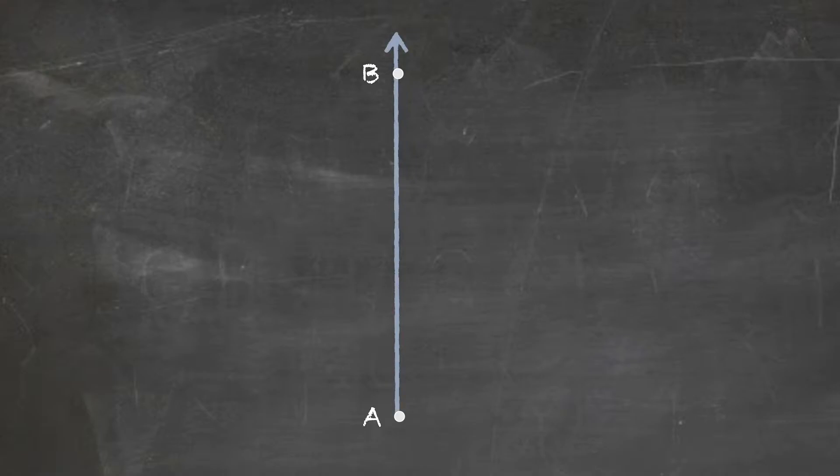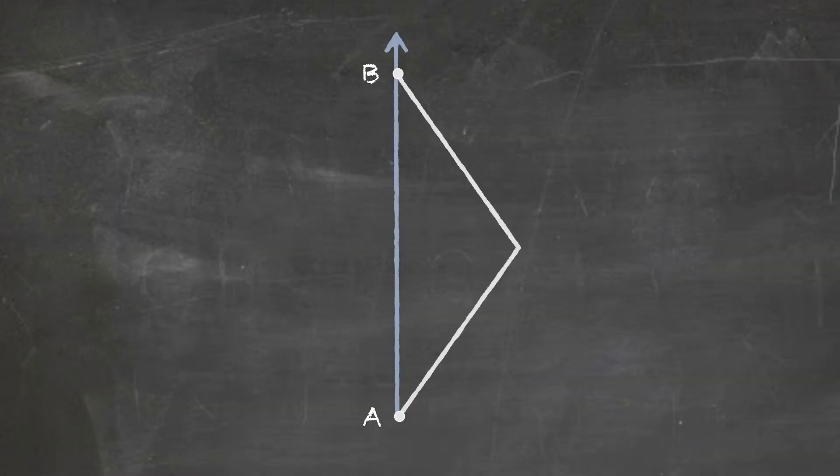Now this tells us something really interesting about geometry. Take two time-like separated events — that is, two events that can be connected by a time-like curve. The traveling twin's trajectory looks like a triangle coming off that curve. We learned that a lot less time passes for that traveling twin. In fact, the larger the triangle, the less time passes.